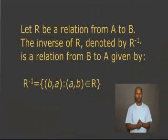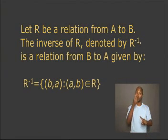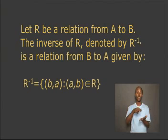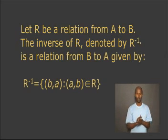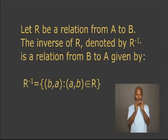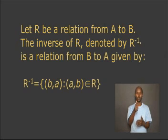Today, we will study the inverse of a relation. This concept is explained by the following definition. Let R be a relation from A to B. The inverse of R, denoted by R to the power of negative 1, is a relation from B to A, given by R to the power of negative 1 equals the set of ordered pairs (B, A), such that A is R-related to B.